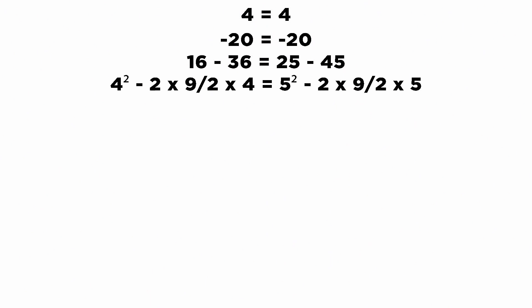Now multiply -5 on both the sides. -20 can be written as 16 - 36 and 25 - 45. Now 36 and 45 can be written as shown here.